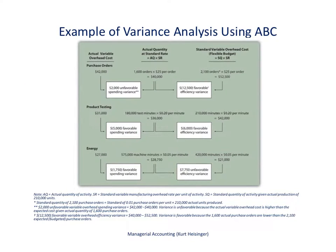The first thing to notice in this variance analysis using activity-based costing is that it is very similar to looking at the variable manufacturing overhead variances using one allocation base. Instead of these three different types of activities — purchase orders, product testing, and energy — we would just have one. I have a separate lecture related to that traditional costing scenario, and it might be helpful to look at that first, because this is really just an extension of that approach.